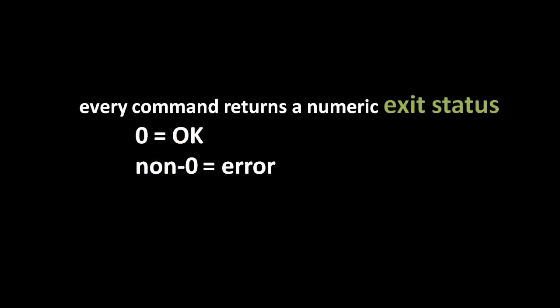Somewhat analogous to how functions return values, every command in the shell returns what's called an exit status, or sometimes an exit code. The exit status is always an integer. By convention, the value zero denotes that the command completed successfully without error, while any value other than zero indicates some kind of error. What that error is exactly depends on the particular program, so if you get a non-zero exit status you should consult that program's documentation.